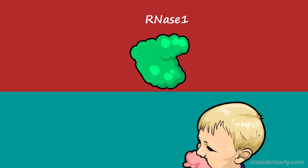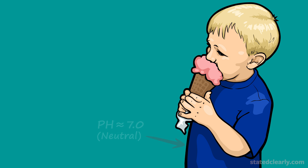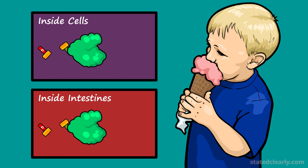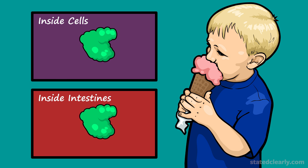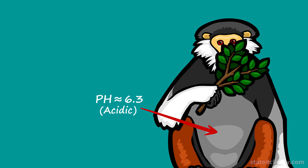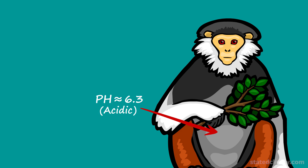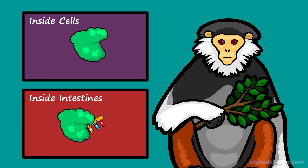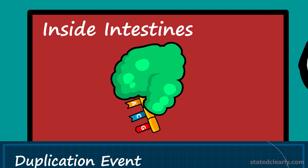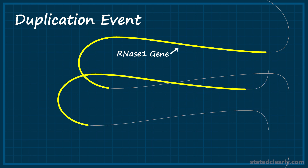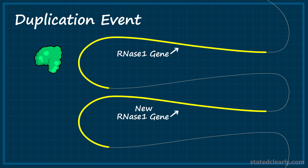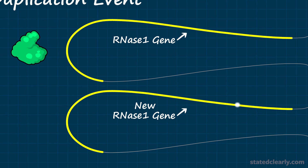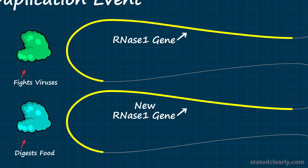In humans, the pH or acid levels of the intestines are pretty much the same as those of your cells, allowing a single version of RNase-1 to work well both fighting viruses and digesting food. In leaf-eating monkeys, however, the intestines are more acidic. This acid helps break down the tough cell walls of raw leaves, but unfortunately the extra acid also slows down RNase-1 proteins, which are extremely sensitive to acid. Scientists have found that a relatively recent duplication of the monkey's RNase-1 gene fixed this problem — the original gene still makes normal protein to help fight infections, but the new gene began accumulating mutations that slowly made it better and better at functioning in acid.